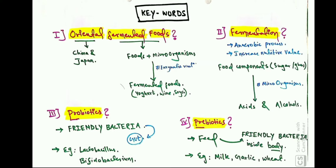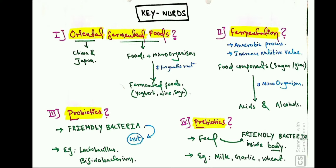Before we start today's topic, let's look at some keywords that help us understand soy sauce production. Since soy sauce is an oriental fermented food, our first keyword is 'oriental fermented foods.' The word 'oriental' refers to things belonging to countries of East and Southern Asia, especially China and Japan. Fermented foods are foods produced through the fermentation process, which is an anaerobic process in which food components like sugars, glucose, and lactose are converted to acids and alcohol with the help of microorganisms. Fermentation also increases the nutritive value of food.